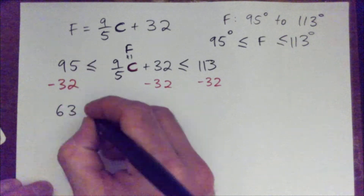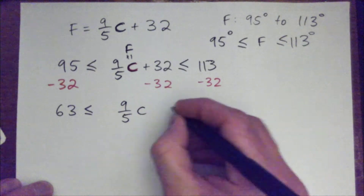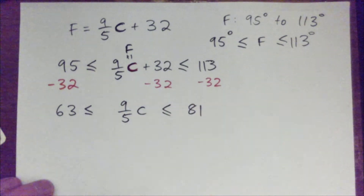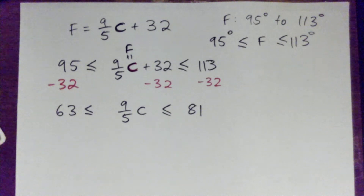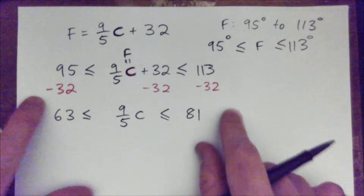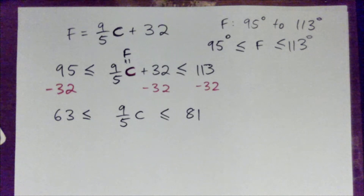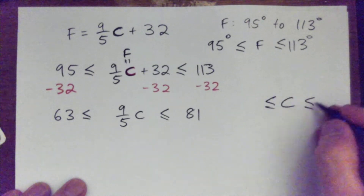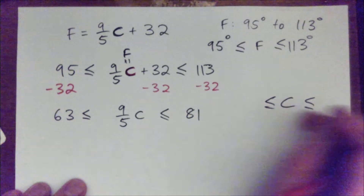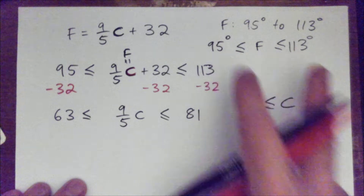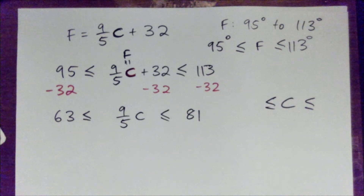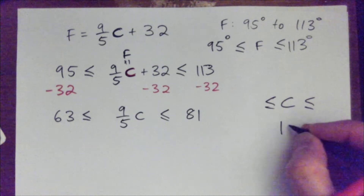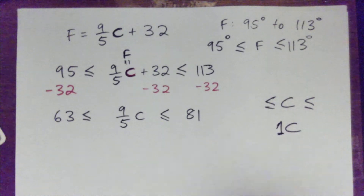And this becomes 63, and we have 9 fifths C here, and we have 81 here. So we subtracted 32 from everything. The trick to get C on its own is you want to end up with C less than or equal to something, less than or equal to something. That's what we want — that the Fahrenheit range of 95 to 113 is equivalent to the Celsius range of whatever it is. But C is the same thing as 1C.